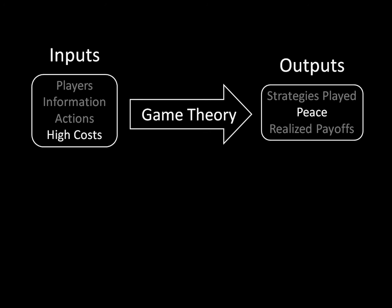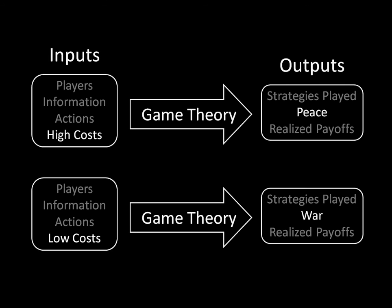But maybe we have peace all the time in this model — maybe the costs don't actually matter. Well, game theory can allow us to establish that costs matter by looking at a different situation. Let's hold everything else constant — the players, the information, and the actions available to them — and just change one thing: low costs instead of high costs. We're varying the parameters that we put in as inputs. We still use the same logical mapping known as game theory to take those inputs and give us outputs. And maybe the output switches from peace to war. Now we have a clear causal argument: when we have high costs, we have peace; when we have low costs, we have war. So holding everything else constant, we can now say conclusively that high costs cause peace and low costs cause war.